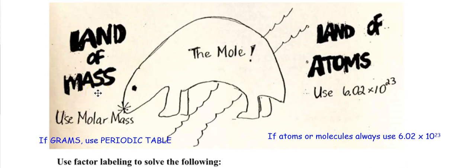This is super-duper important, and this is why factor labeling is so important. This is why you write down every unit — the units tell you what numbers to pick. This is one of the hardest problems of this whole unit: how do you know what numbers go where? If you write down the G for grams, you're going to use the periodic table and find the molar mass. If you write down atoms or molecules, you're going to use 6.02 times 10²³. Every single time you write down the word mole, it's one.